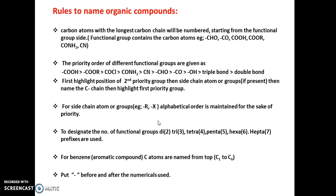The first rule says that we have to number the carbon atoms following the longest carbon chain in the compound. In the compound you might have found a lot of carbon chains, so you have to number that carbon chain which contains the maximum number of carbon atoms. That is called the longest carbon chain.